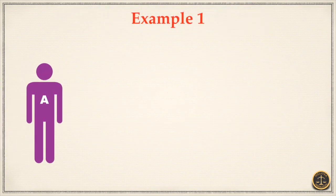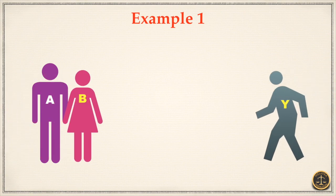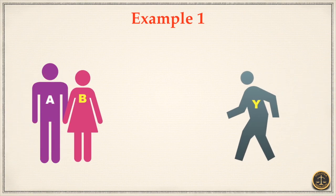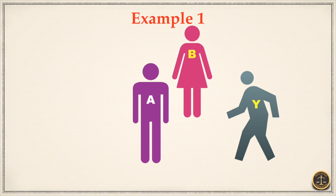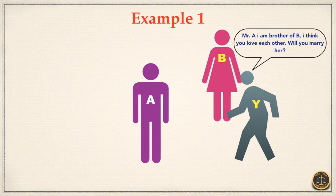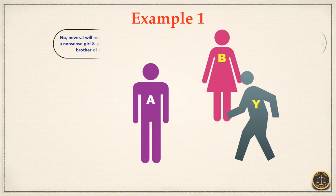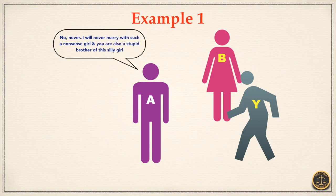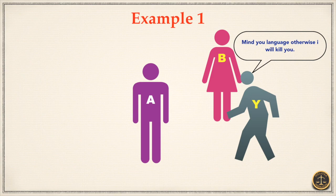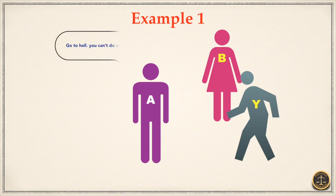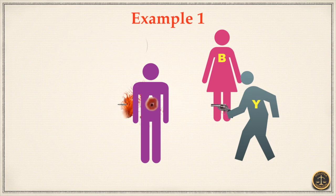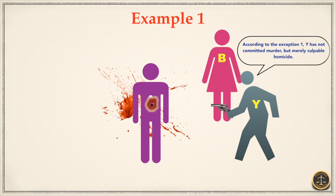Mr. A was in love with Miss G, who is the sister of Mr. Y. Y came to know about it and met with A. Y asked A, 'Will you marry my sister?' A refused and also abused Y and his sister both badly. Y lost his control because of A's grave and sudden provocation and he shot A. According to Exception 1, Y has not committed murder but merely culpable homicide.